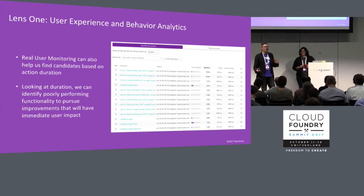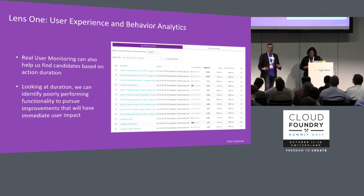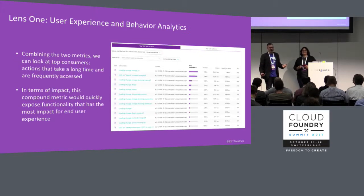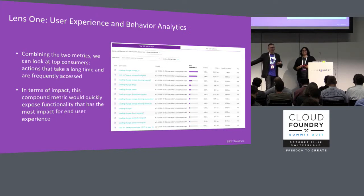The other thing to look at is transactions that take a long time — things that are very poorly performing. These are generally going to be really complex transactions, and something like this is sometimes a prime candidate for refactoring just due to the complexity. Then there's another measure that combines the two: a multiplication of the response time as well as the action rate, resulting in an overall user experience consumption value. Really it's looking through that user experience lens to figure out what might be a good candidate for refactoring.